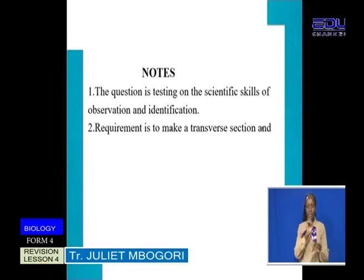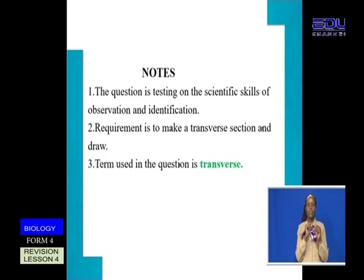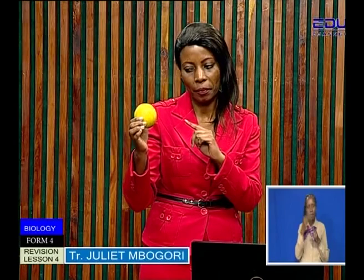A well-labeled diagram. Here you have been tested on the skills of observation, identification, and also classification. You need to understand the term transverse. I will help you understand what is meant by transverse. With me I have the specimen, and the specimen is an orange — that is the name of the specimen. To make a transverse section,